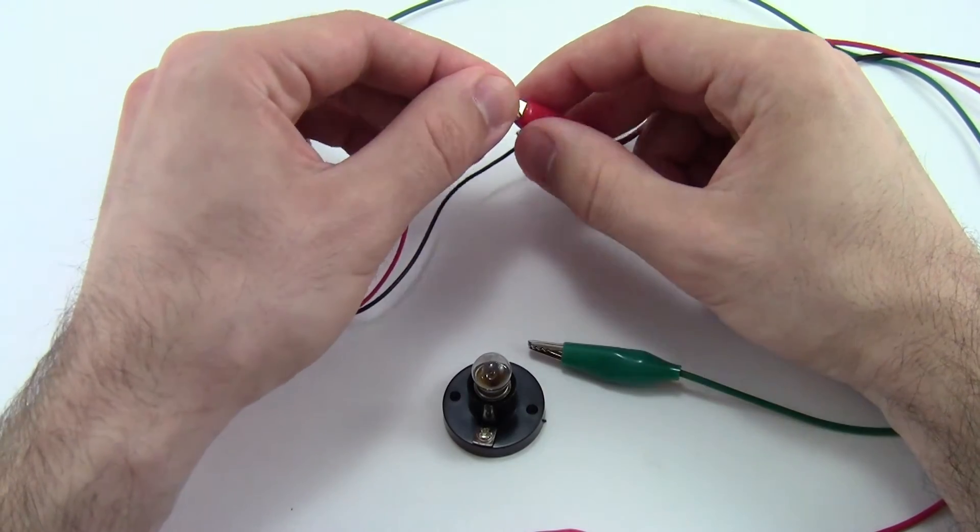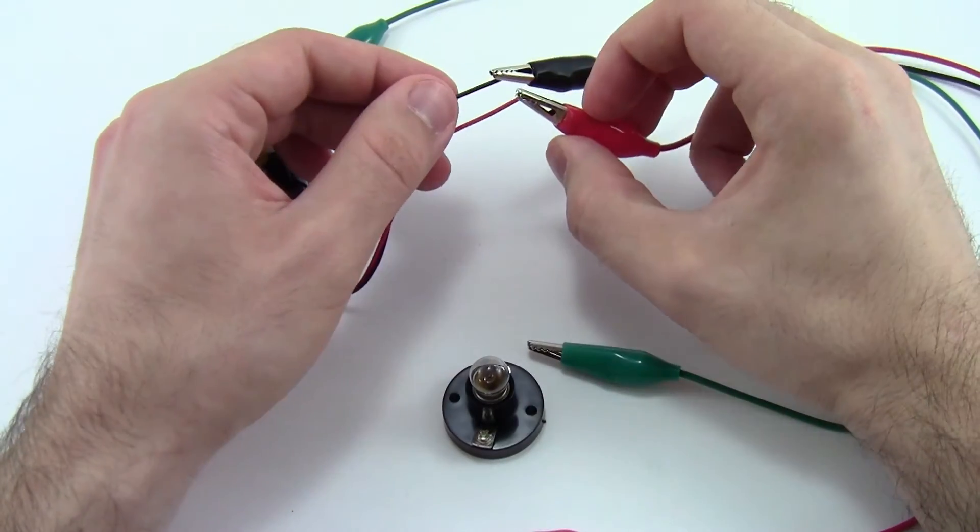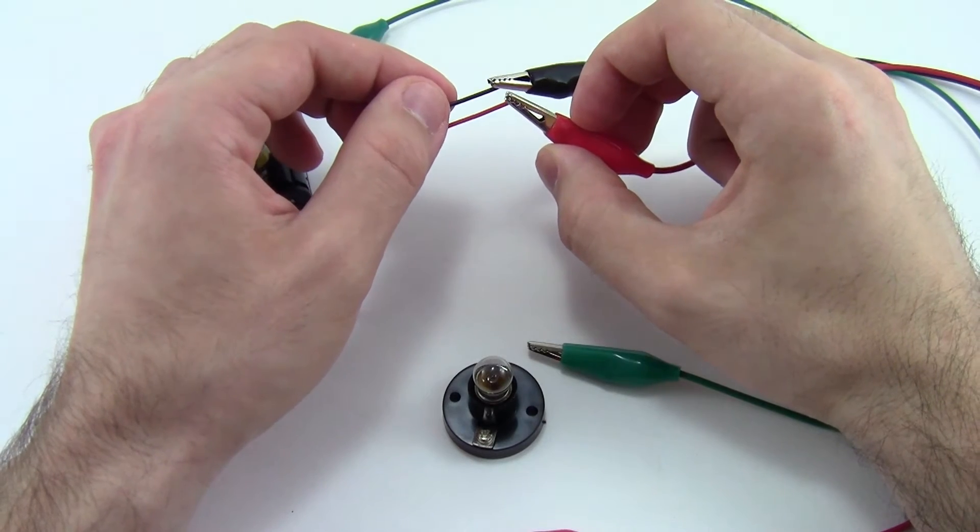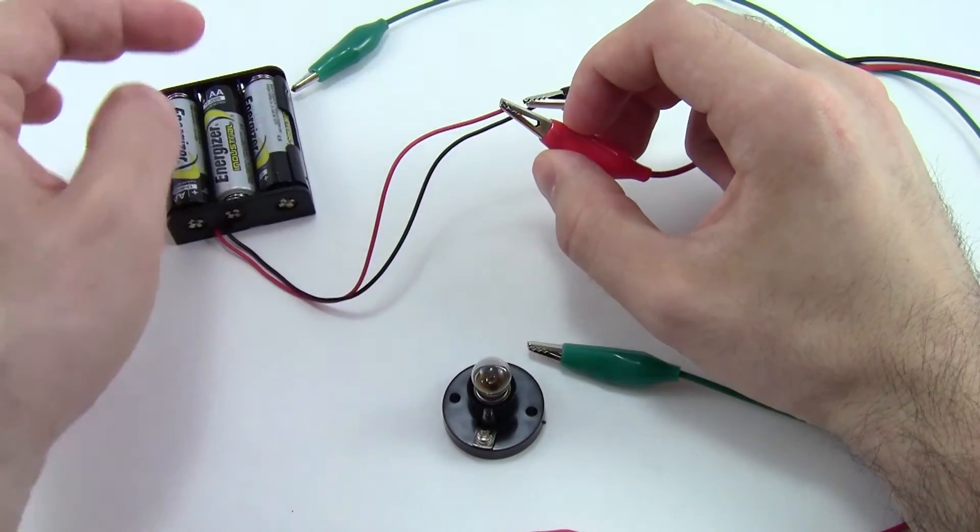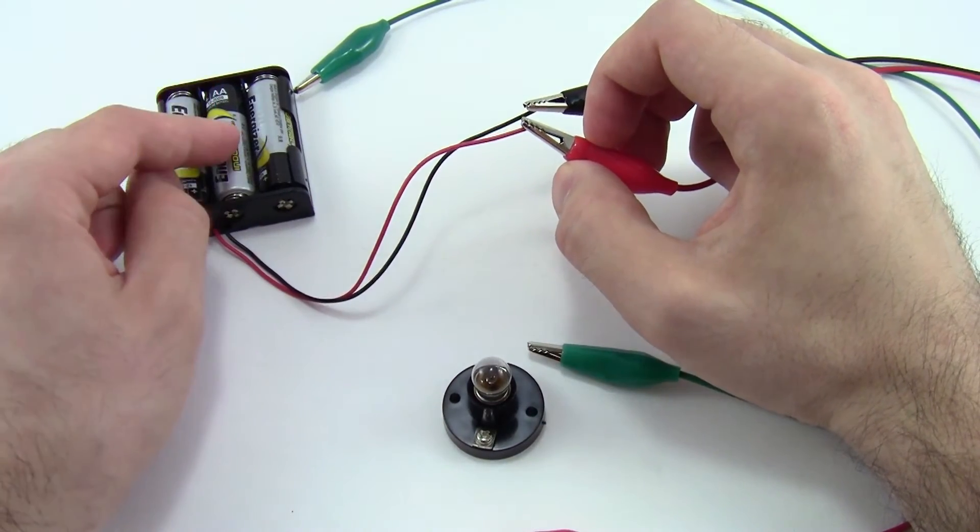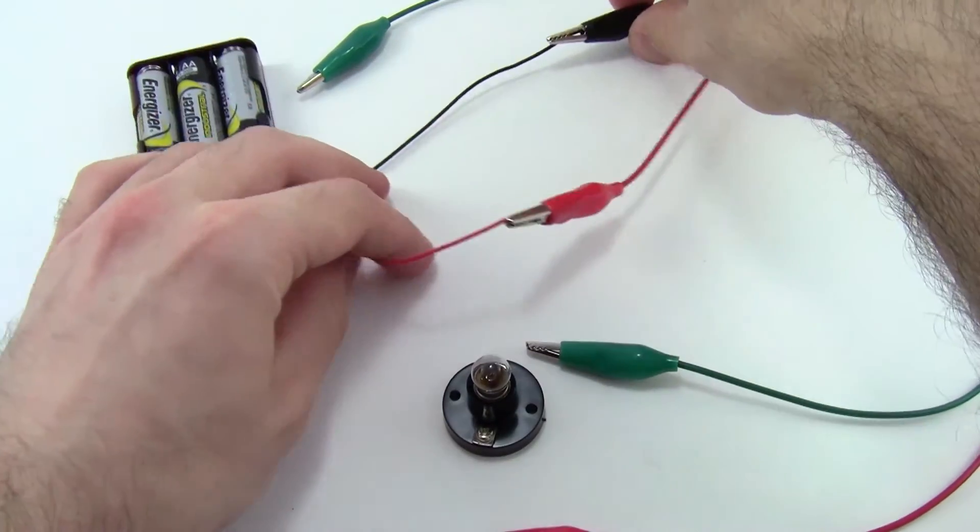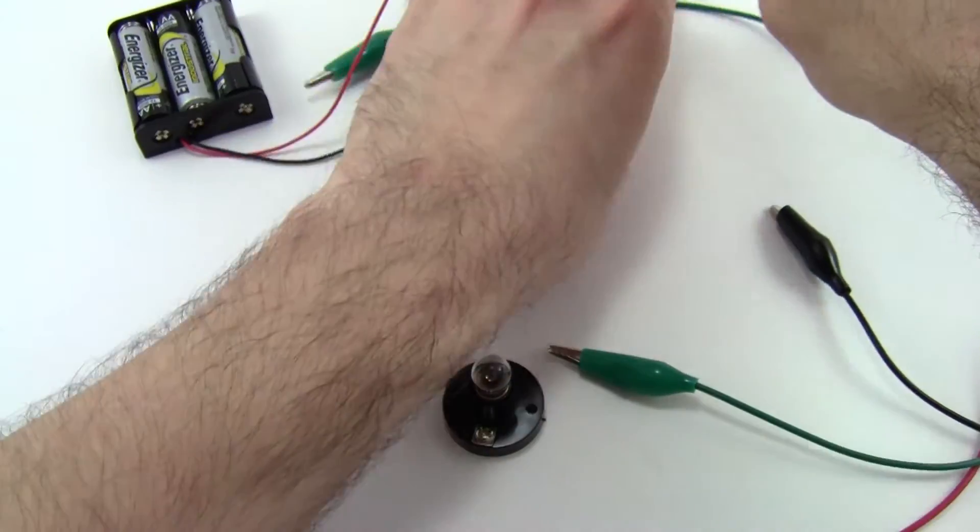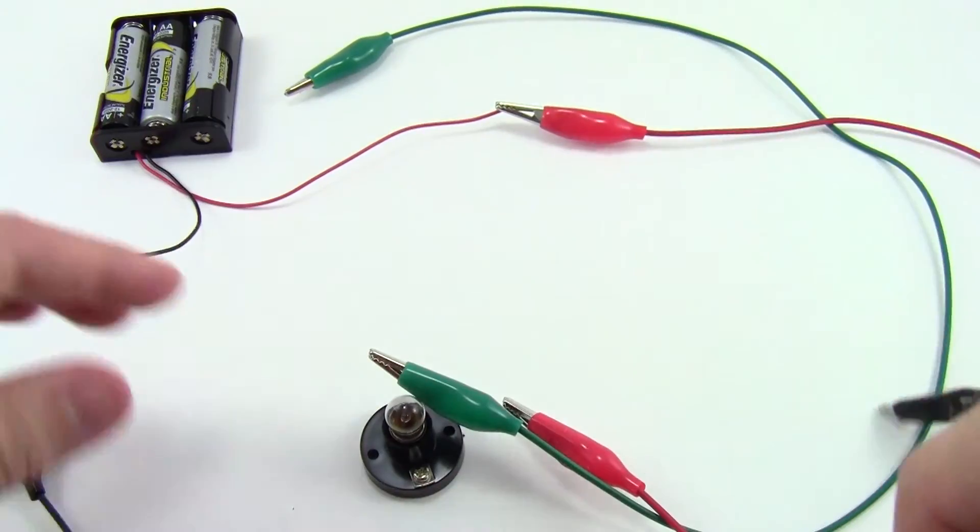Now here is one important safety note. At this point, you want to make sure that the red and black alligator clips do not touch each other directly. That will create a short circuit, and can cause your battery pack to get very hot. So keep those nice and spaced out away from each other on your table so they don't bump into each other.